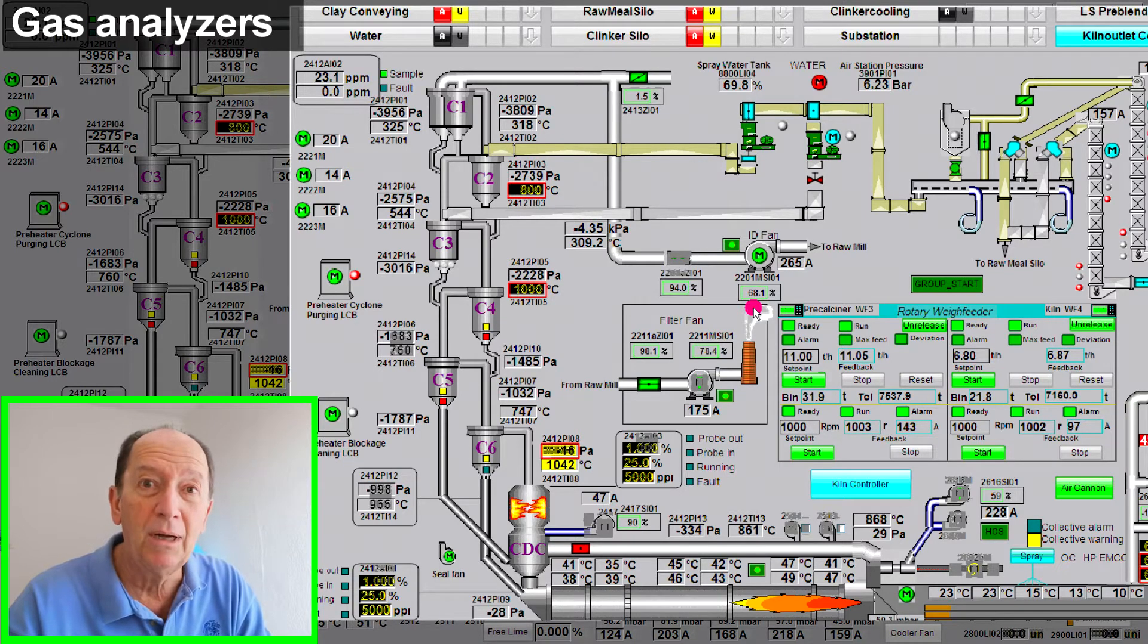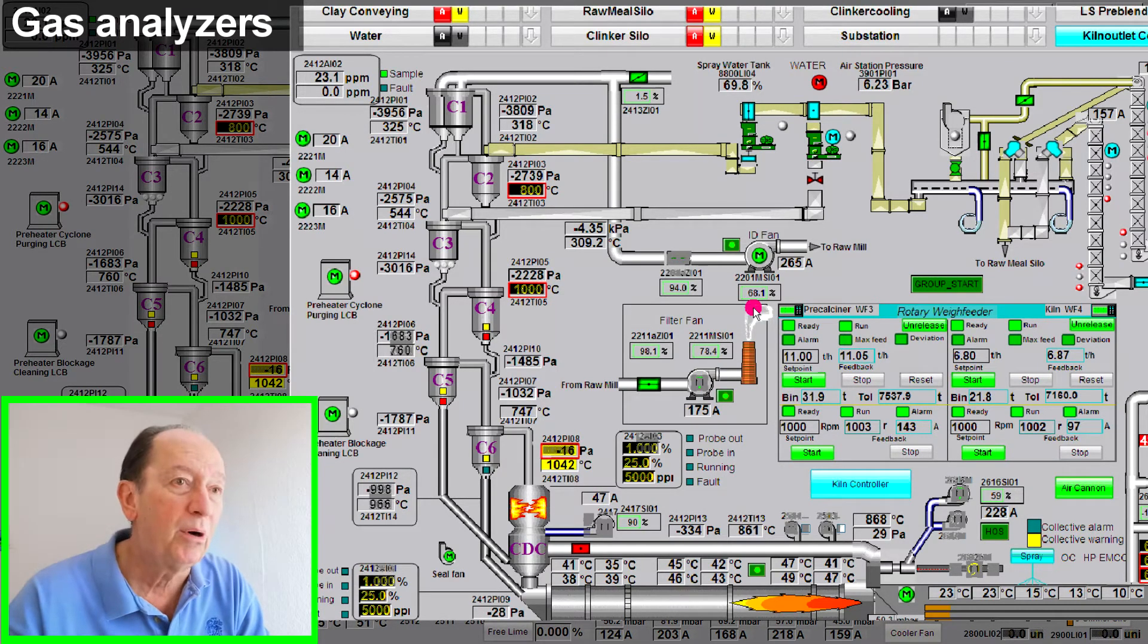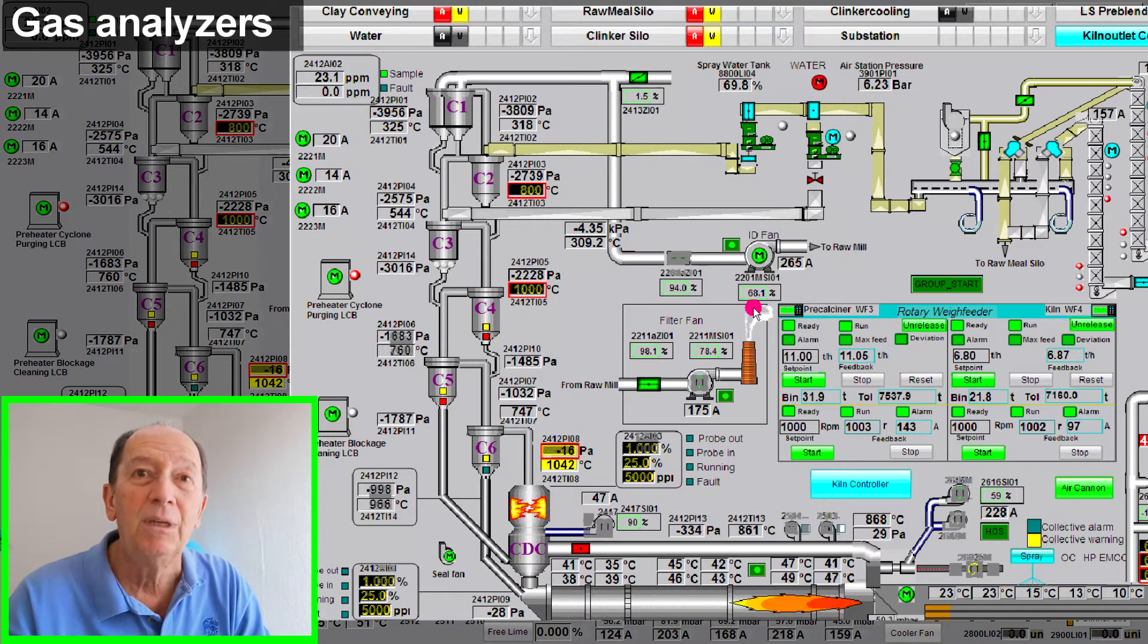But to be sure about it, I need these gas analyzers. The usual excuse is that spare parts to fix the analyzer are very expensive. Well, let me tell you, running a kiln below capacity is costing a fortune. So fix your analyzer and make sure they run and are calibrated properly.